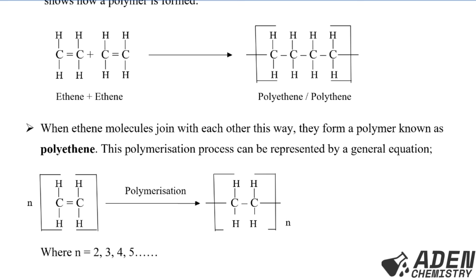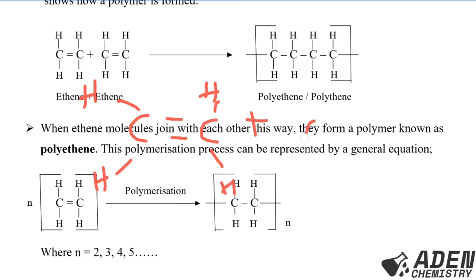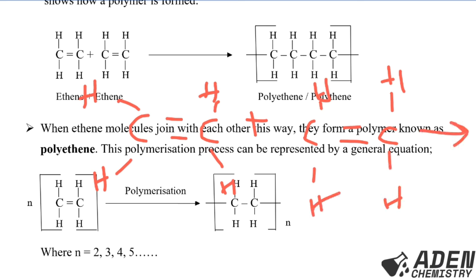To form the polymer, we deal with it the same way as the additional reaction. First, ethene is written showing its structural formula: H H C=C H H, plus another ethene molecule of the same structure. Through the polymerization process, the double bonds are going to be broken.